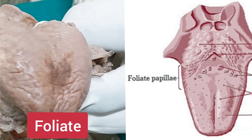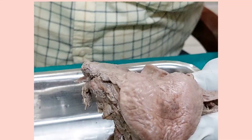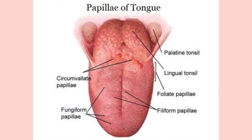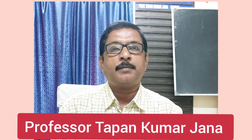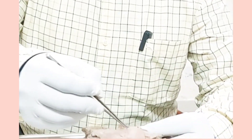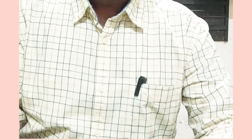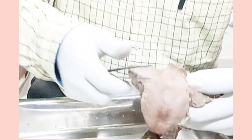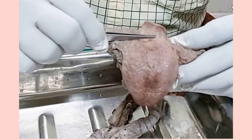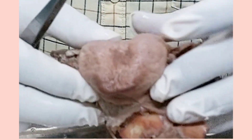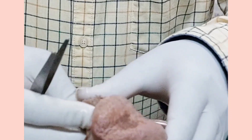The foliate papillae also contain taste buds. So there are 4 types of papillae: vallate papillae, fungiform papillae, filiform papillae, and foliate papillae. Of these 4 types, the filiform papillae have no taste buds. In the other 3 papillae you will get taste buds. Because of the presence of papillae, the anterior two-thirds of the tongue is also called the papillary part. There are many differences between the anterior two-thirds and posterior one-third of the tongue, which I will discuss afterwards.